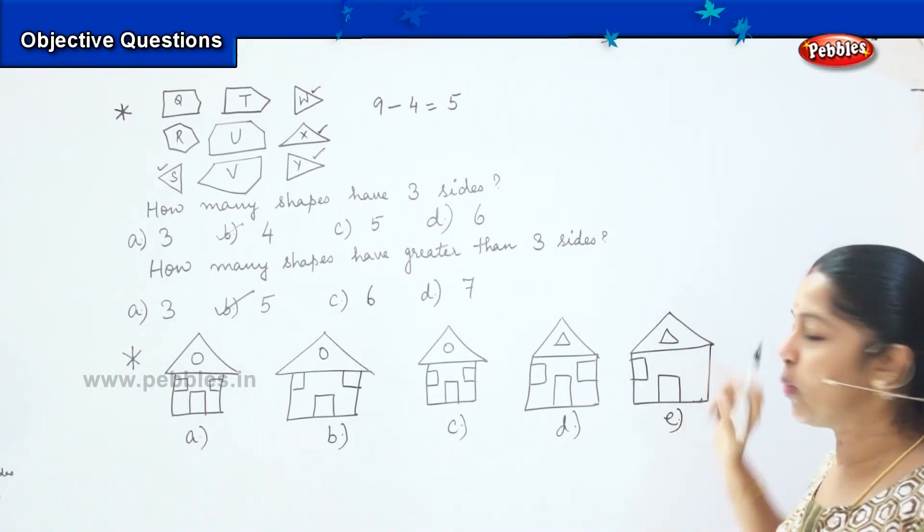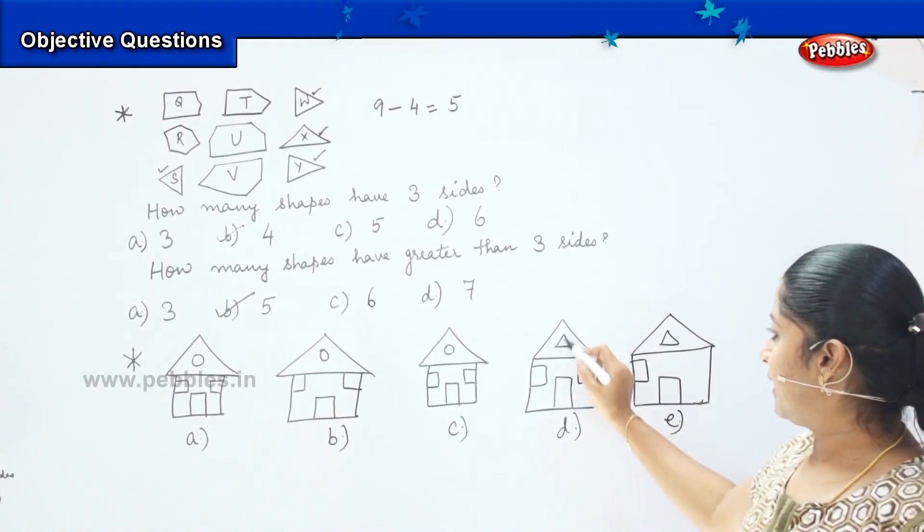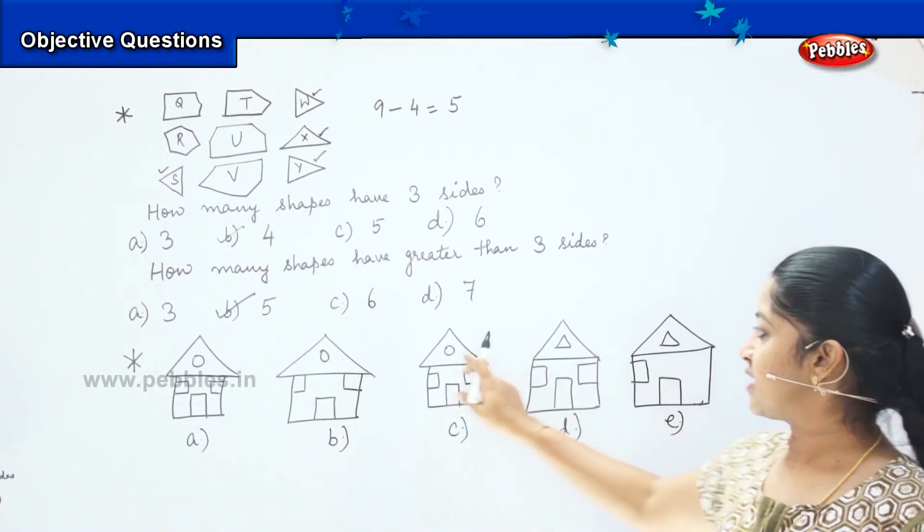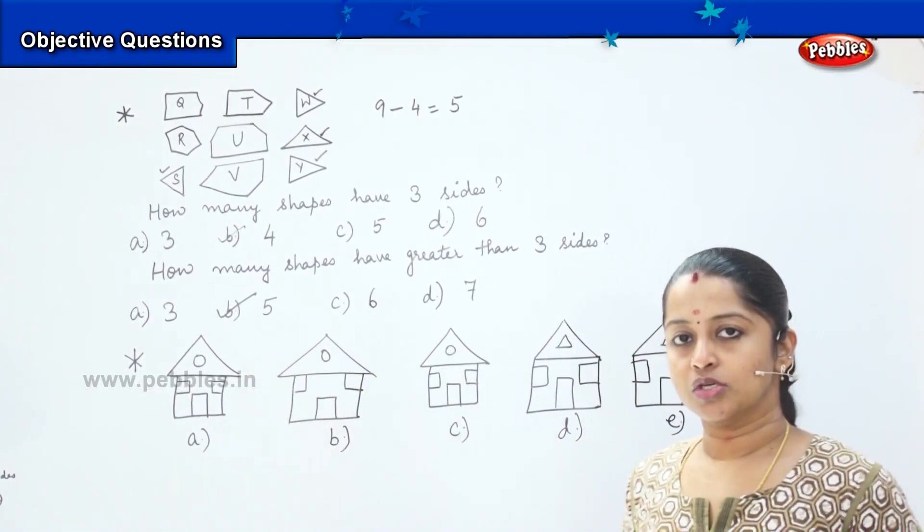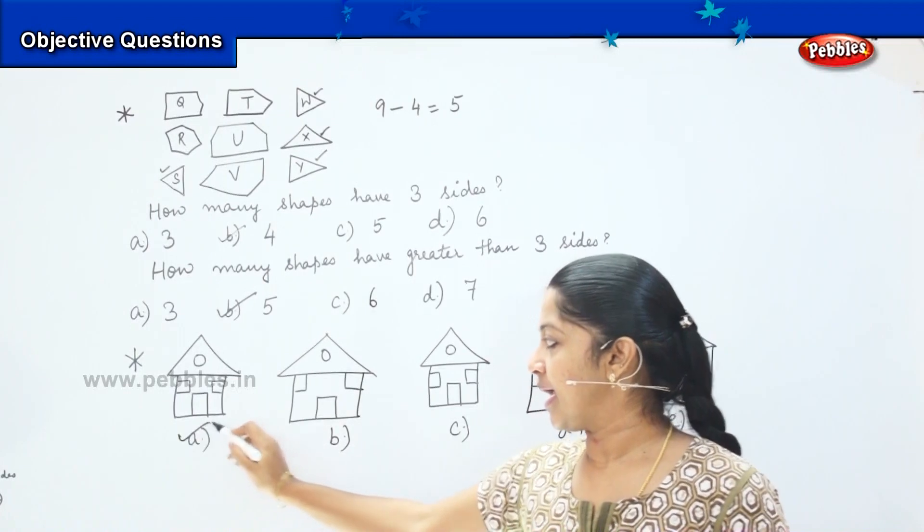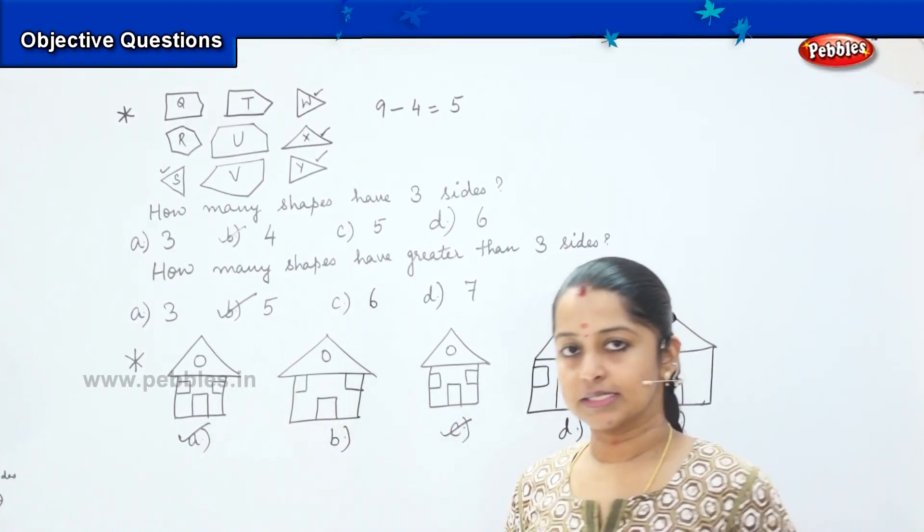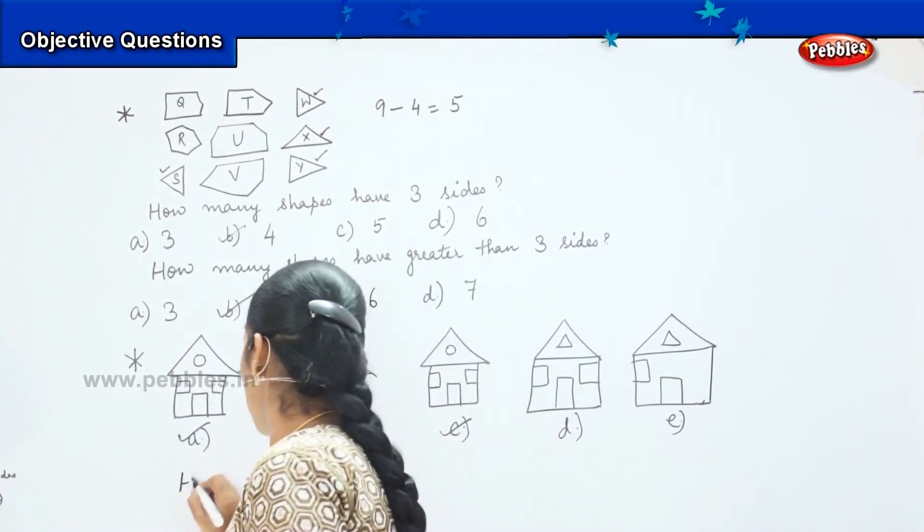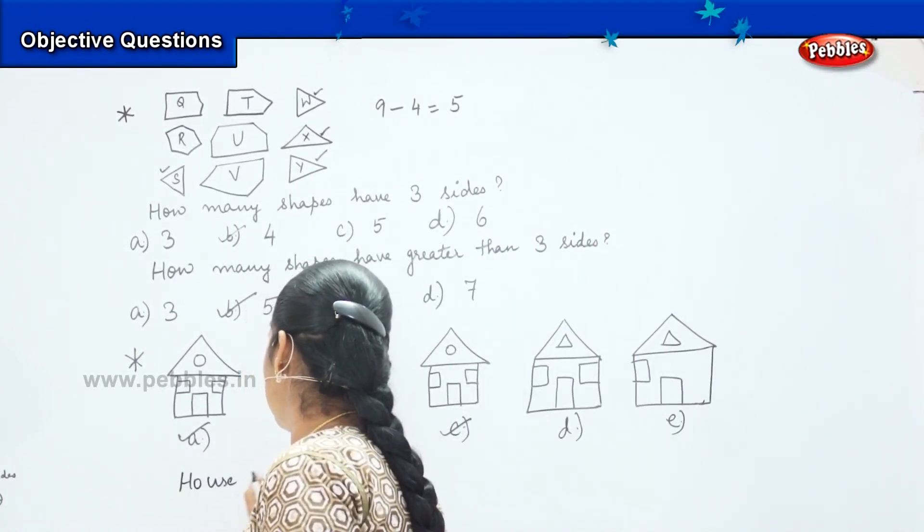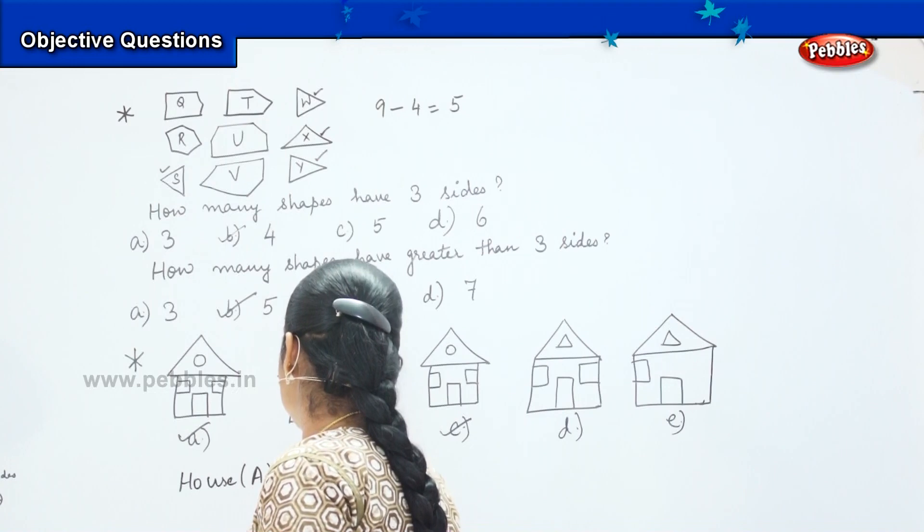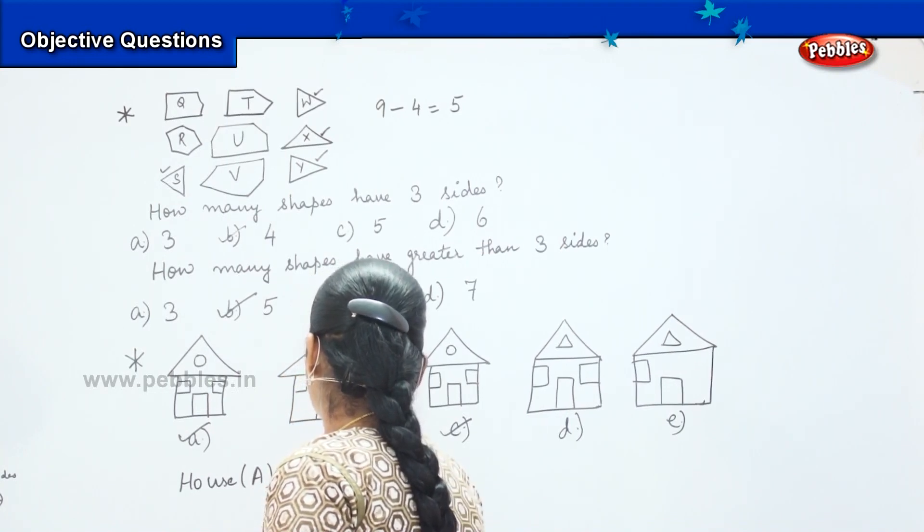And E has only one window. Moreover, they have a triangle on the top, whereas the first three is having a circle. So the right option will be option A and option C. So A and C are similar. So house A and house C are alike.